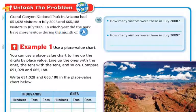Our essential question: how can you compare and order numbers? Let's unlock the problem. Grand Canyon National Park in Arizona had 651,028 visitors in July 2008 and 665,188 visitors in July 2009. In what year did the park have more visitors during the month of July?